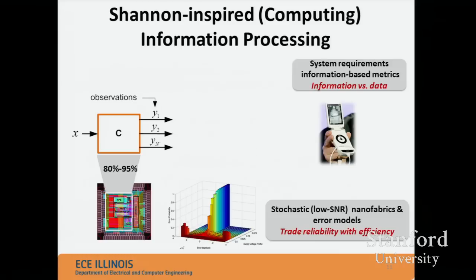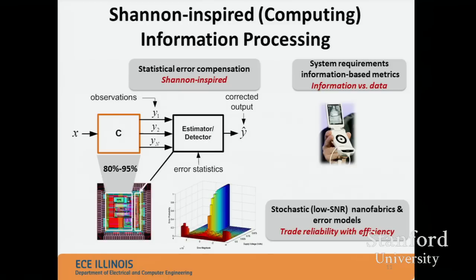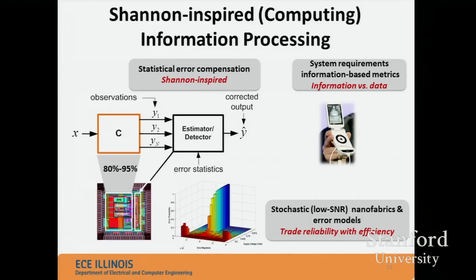Because block C is unreliable, its outputs don't meet system-level requirements. So the third component is a block that treats block C as a communication channel and leverages techniques from the Shannon universe — estimation, detection, equalization, channel estimation, error control, and diversity techniques — to enhance robustness of the output. We have to figure out ways to make those techniques low-complexity and then process the outputs of block C, which we want to implement in a non-deterministic manner to get an efficiency benefit.